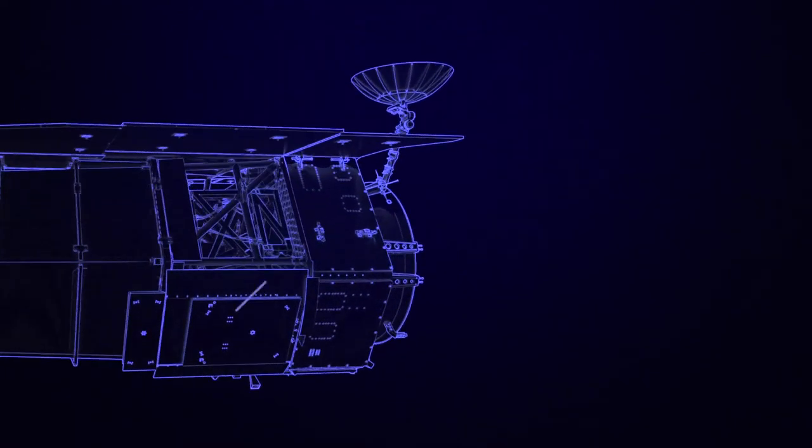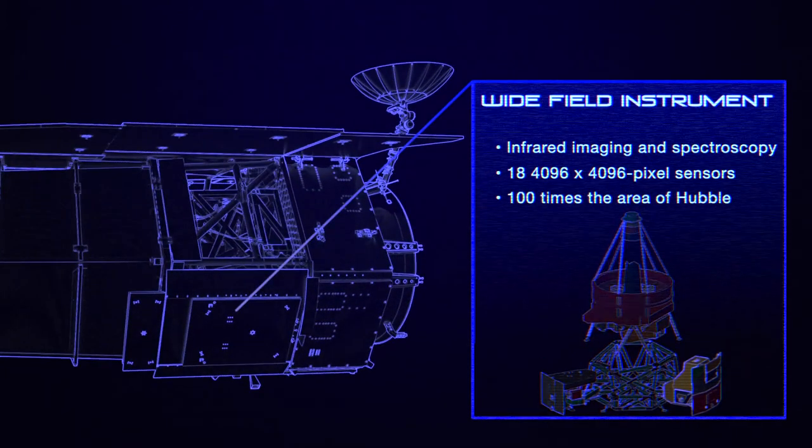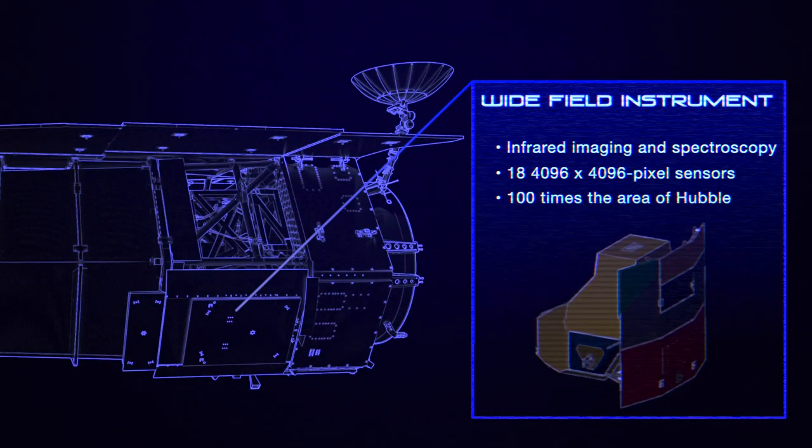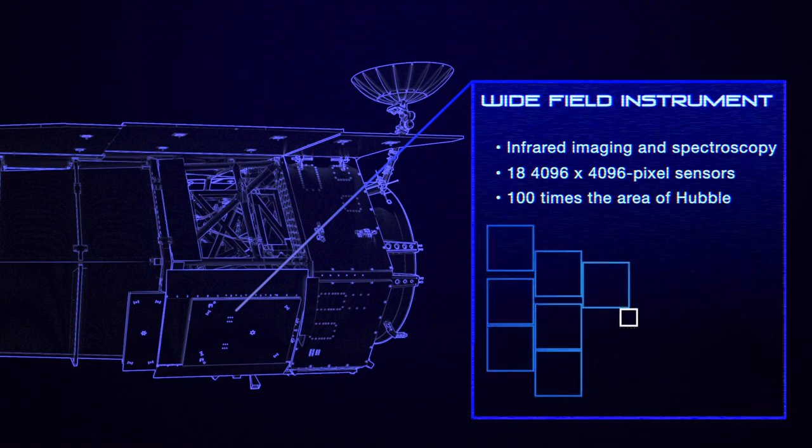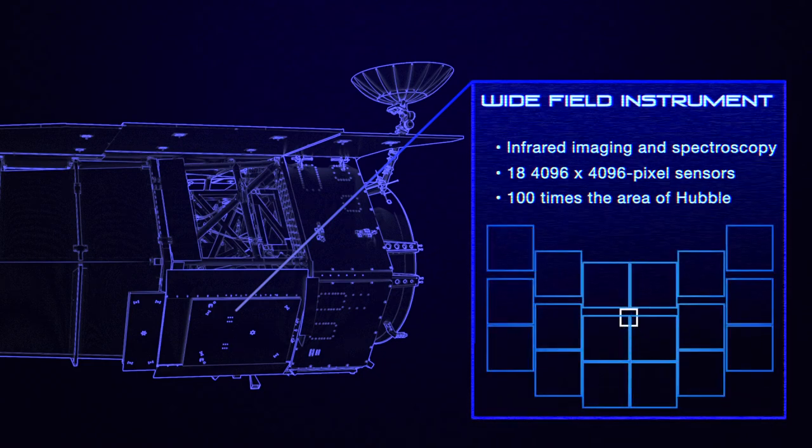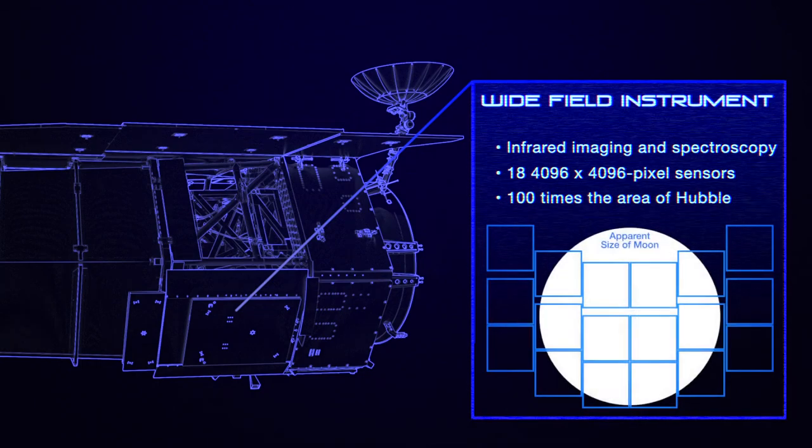Roman's main camera is the wide-field instrument, which will take infrared pictures of the sky to study dark energy, observe galaxies and stars, and find exoplanets. Instead of Hubble's single first-generation image sensor, the WFI incorporates 18 third-generation chips that allow it to take pictures capturing 100 times greater sky area than Hubble's. Each 300-megapixel image will enable scientists to study a large portion of the sky.